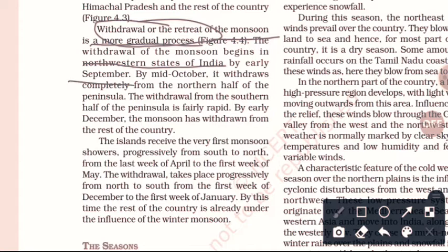By mid-October, the monsoon withdraws completely from the northern half of the peninsula — meaning from north of the Tropic of Cancer, it moves southward. By early December, the monsoon has withdrawn from the rest of the country. Finally, from Tamil Nadu, the monsoon ends by December.